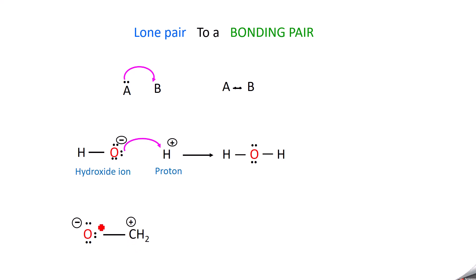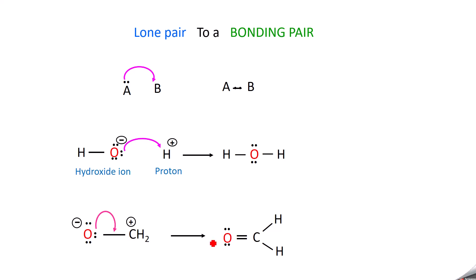In another example, the lone pair on oxygen is shifted over to carbon, so oxygen retains two lone pairs and the shifted lone pair becomes a bond. Since there was already a bond between oxygen and carbon, this gives a double bond with carbon and two hydrogens — this is formaldehyde. The lone pair becomes a bond pair between oxygen and carbon.